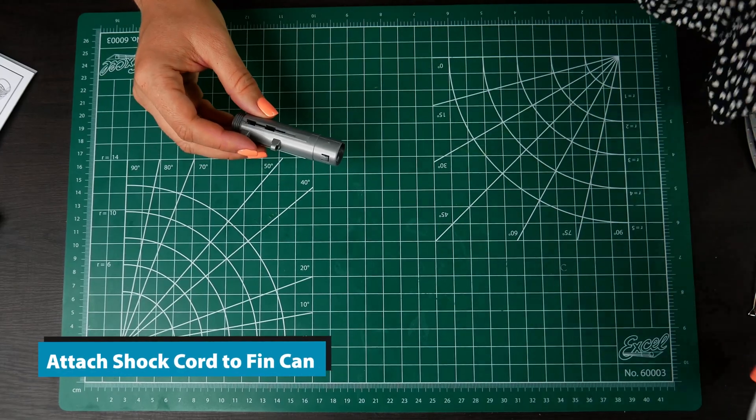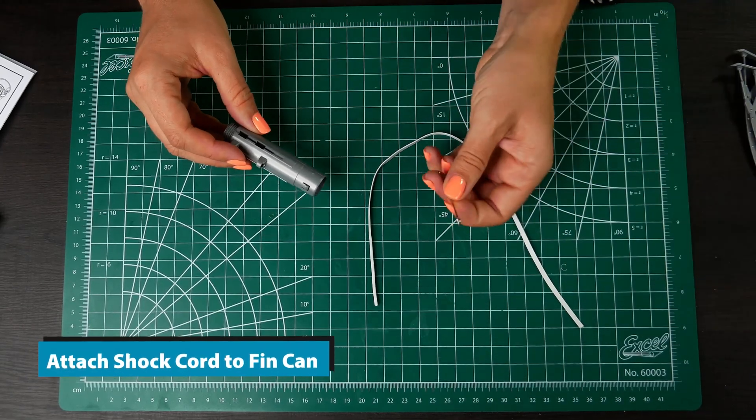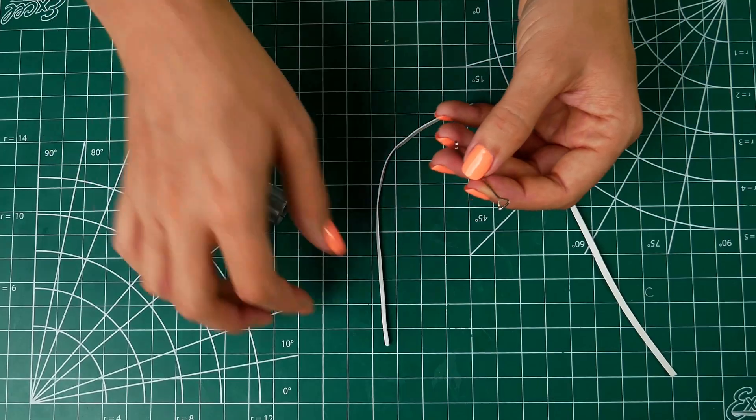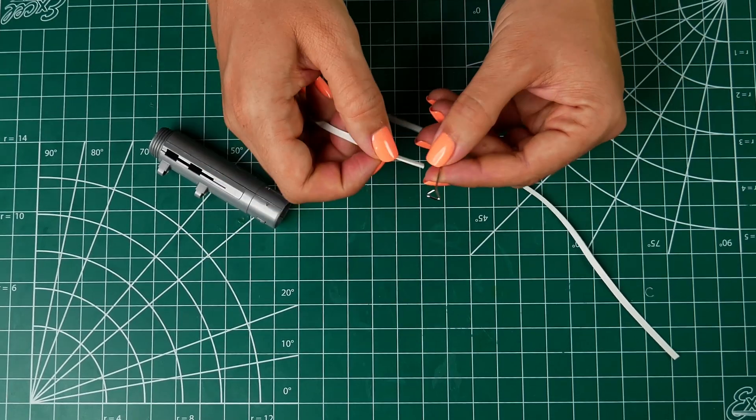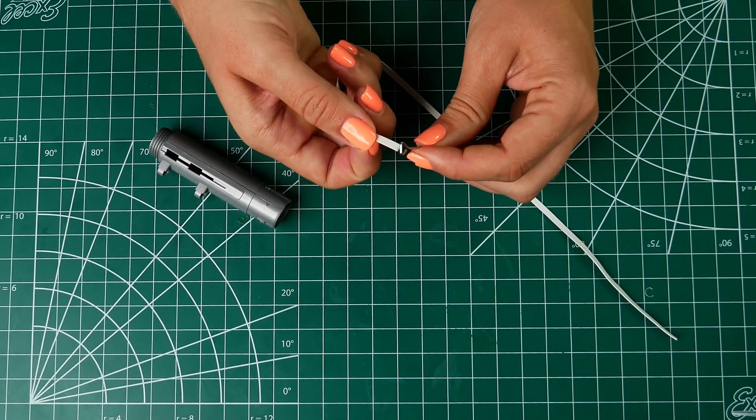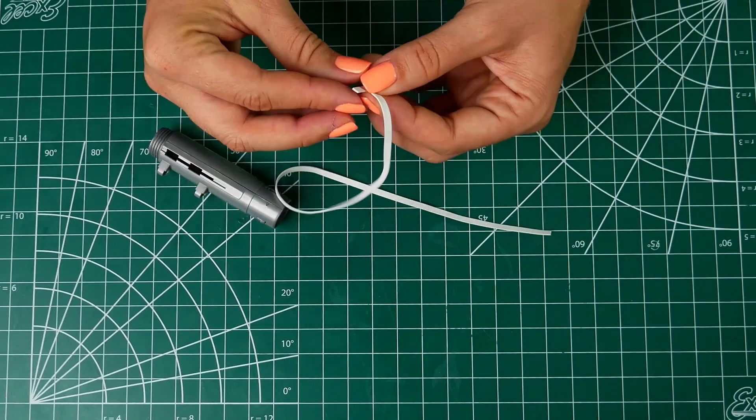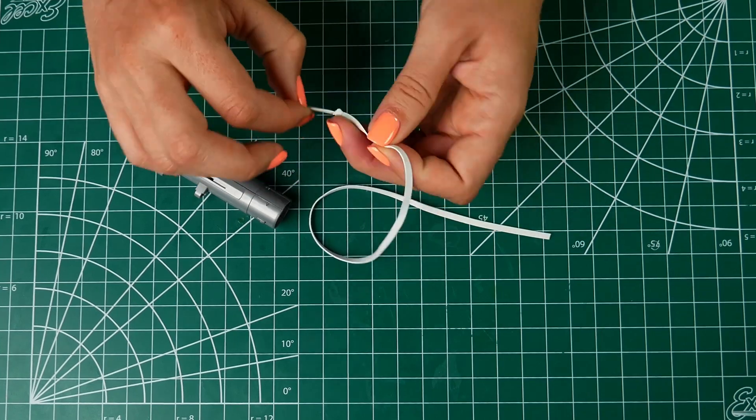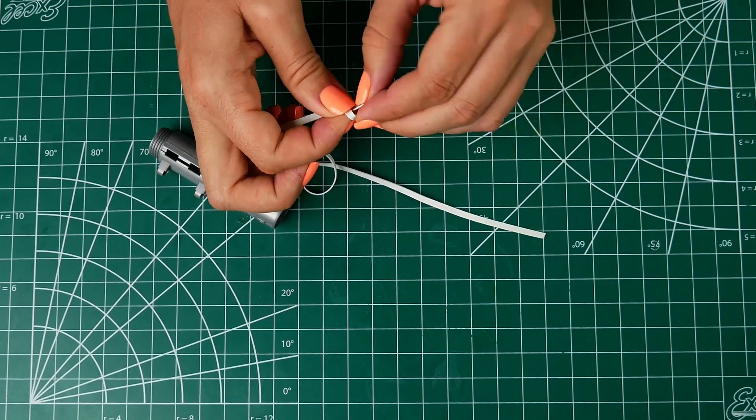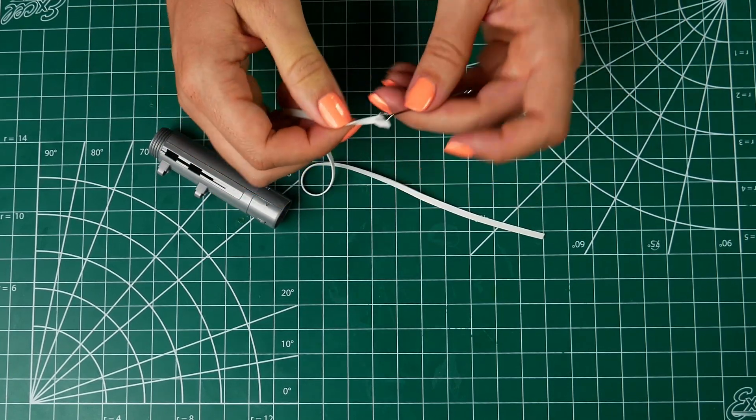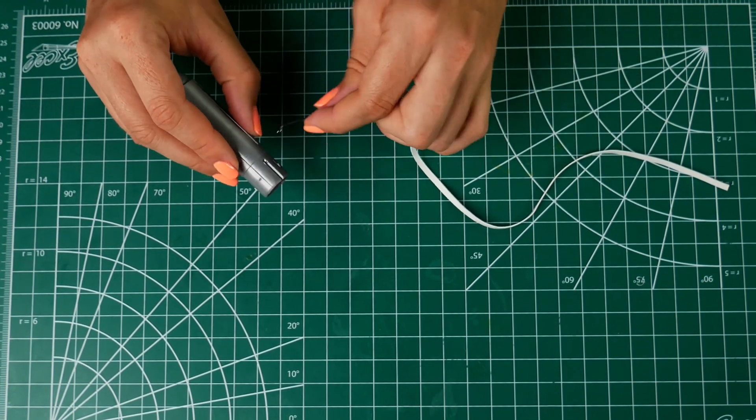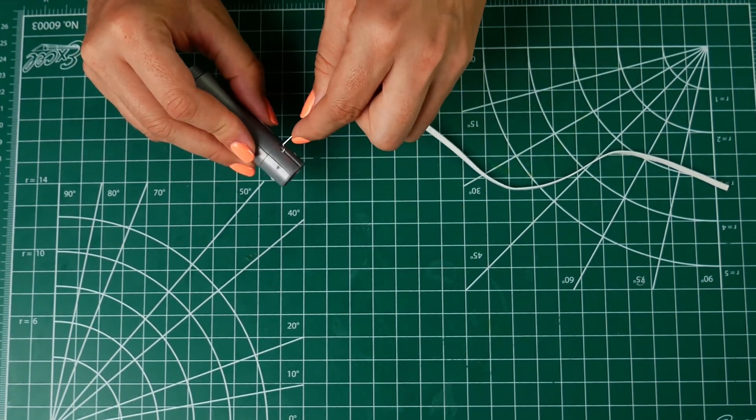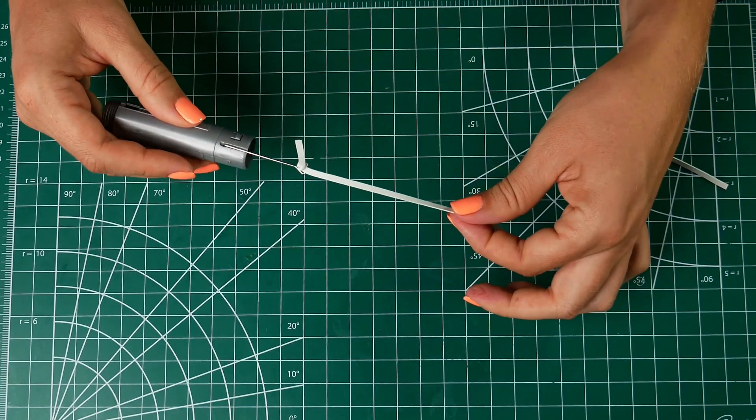Next, you're gonna attach the shock cord to the fin can with this little metal hook. First thing is you're gonna double knot the shock cord into this little triangle. Alright, so next you're gonna take this hook and put it in this little hole and then rotate it down. Just like that.